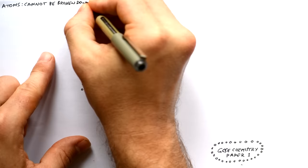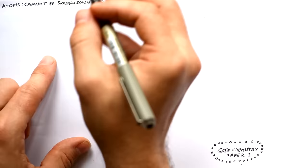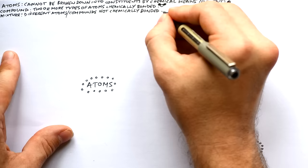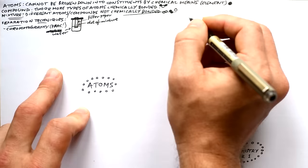Let's start off with the basics. An atom is something that can't be broken down or split into smaller bits by chemical means. Yes, we do add or remove electrons to make ions, but we're not changing the inner workings of the atom. A compound is two or more types of atoms chemically bonded together. A mixture is different types of atoms or compounds not chemically bonded together.